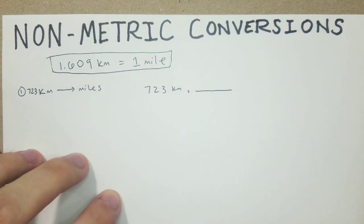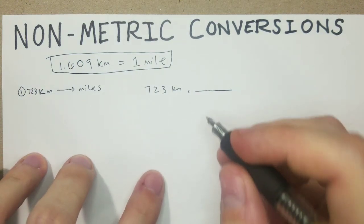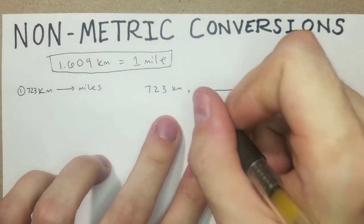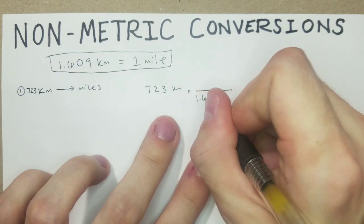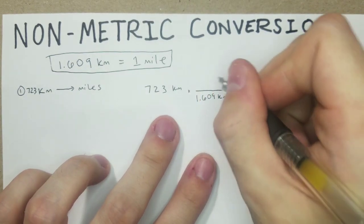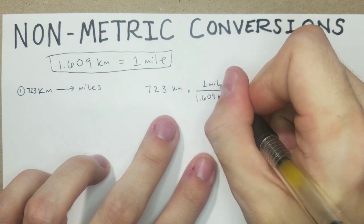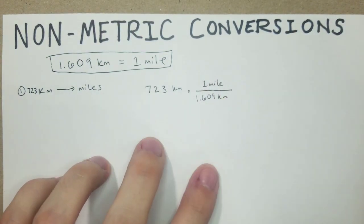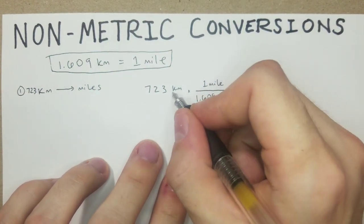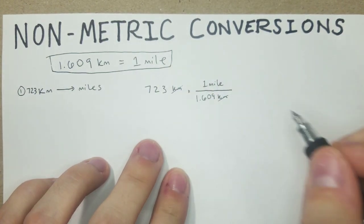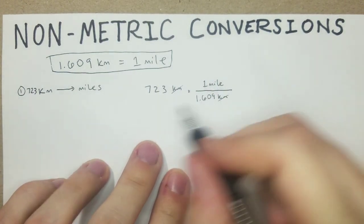Then we're just going to do a series of what looks like fractions. So we know that on the bottom here, we're going to put 1.609 kilometers per one mile. Kilometers up top, kilometers down below, they cancel out. We're left with miles, which is what we're looking for.